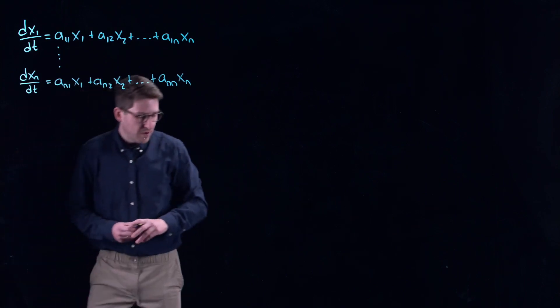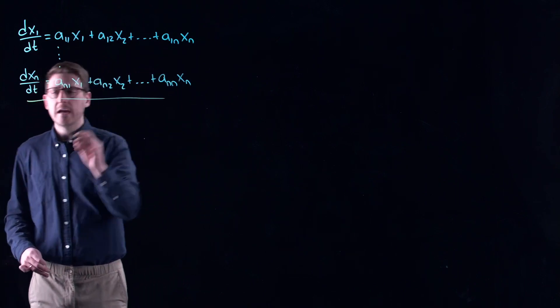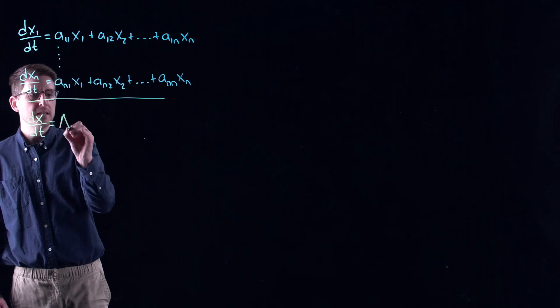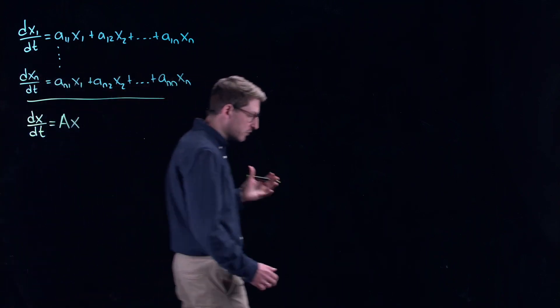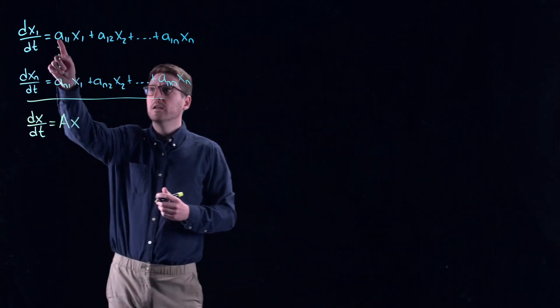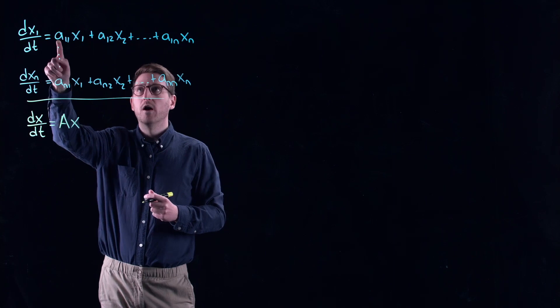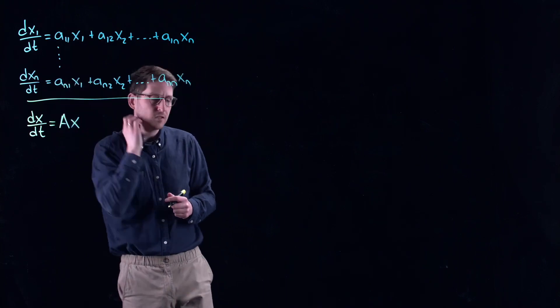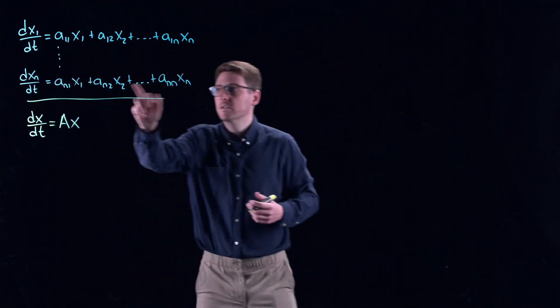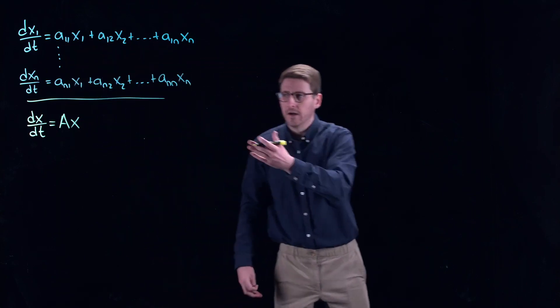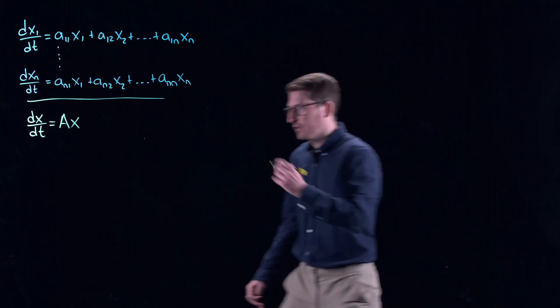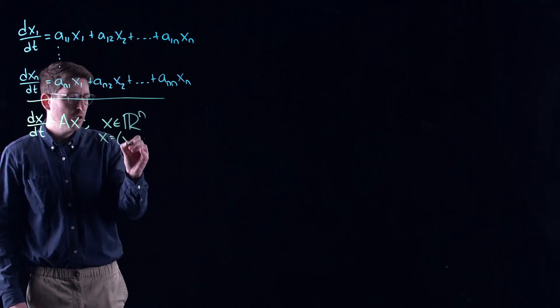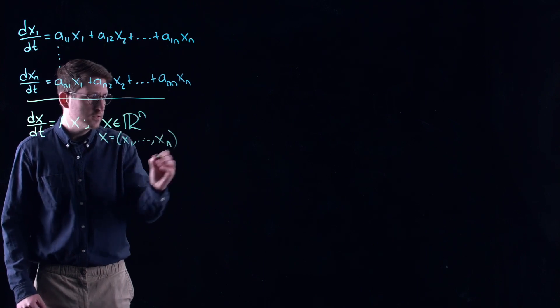You can actually write this much more compactly using vector notation. You could instead just say this is the derivative of the vector of x components, which is equal to a matrix times x. In my case, the matrix here, its top left component is going to be a11, and then across the row it's going to be a11, a12, a1n and so on. So the reason I use this numbering system is so that you can easily identify these as elements of that matrix. In this case my x here is a vector in R^n, it is equal to each one of these state variables that I'm focusing on.